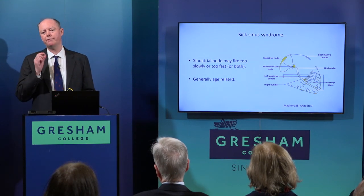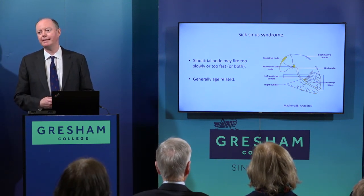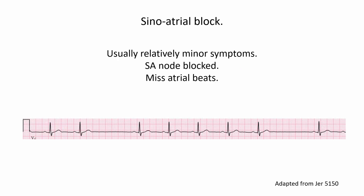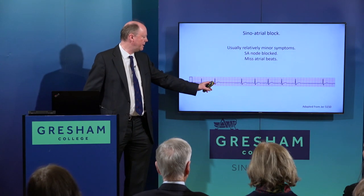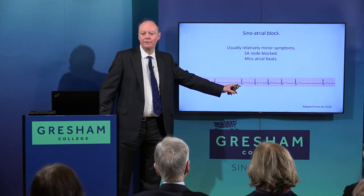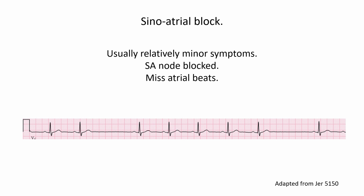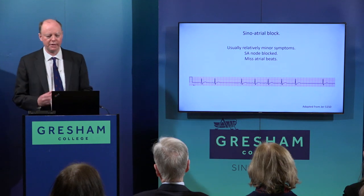The next thing that can go wrong is that the principal pacemaker gets sick — this is called sick sinus syndrome. The node may fire either too fast, causing tachycardia, or too slowly. It's generally age-related and more likely as we get older. The heart rhythm then varies over time because the pacemaker isn't maintaining its steady rhythm. A variant is sinoatrial block, where the P waves are normal along the way but there's a long pause — the SA node has basically gone to sleep — but not so long that the rest of the heart takes over.